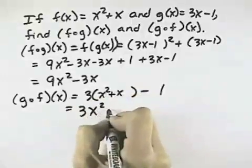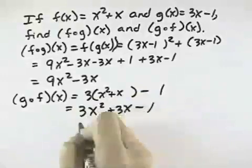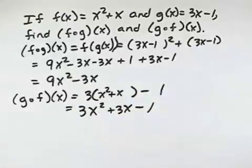Multiplying that out, we get 3x squared plus 3x minus 1, and there are no like terms to combine in that problem.